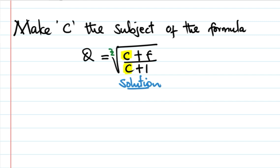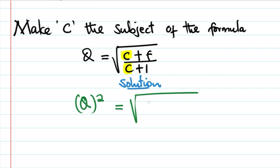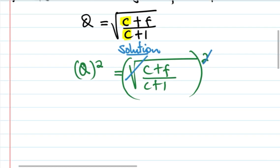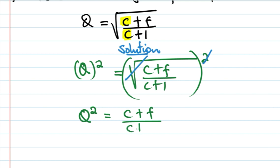If you use the cube root, you can cube both sides. So in this case, Q squared is equal to (C plus F) over (C plus 1).